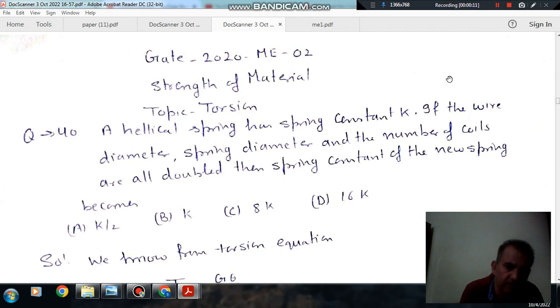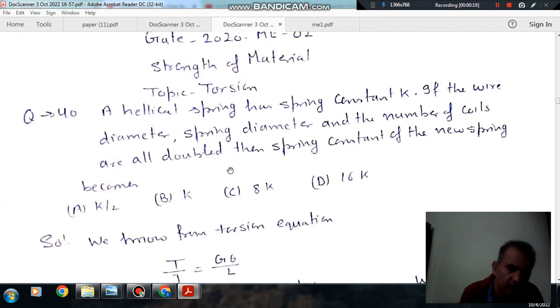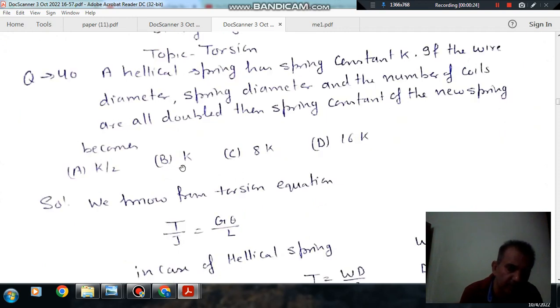A helical spring has spring constant k. If the wire diameter, spring diameter, and number of coils are all doubled, then spring constant of new spring becomes: option A: k/2, option B: k, option C: 8k, and option D: 16k.